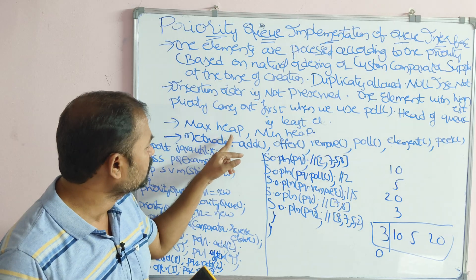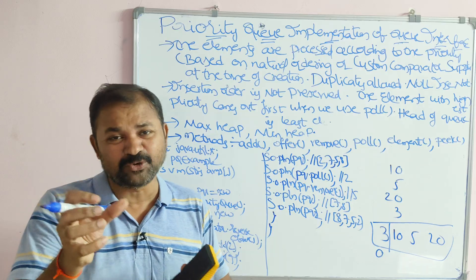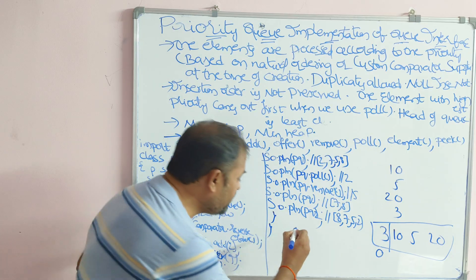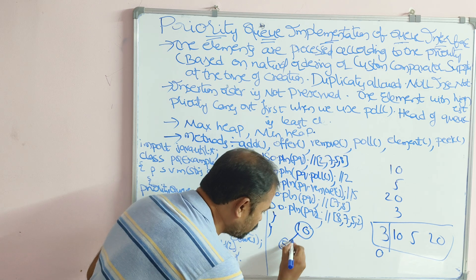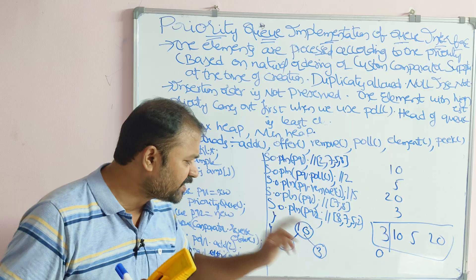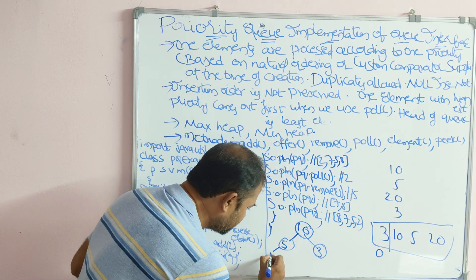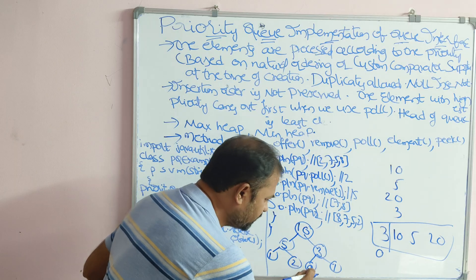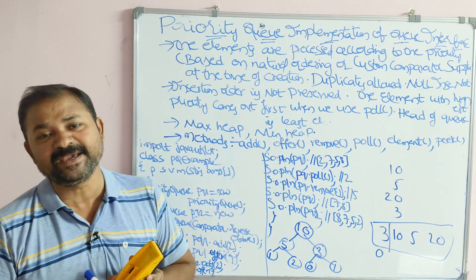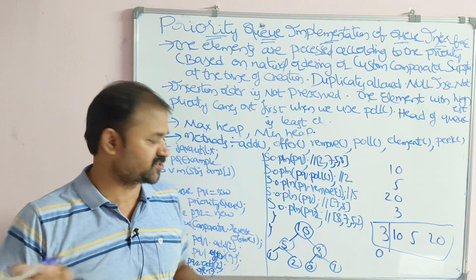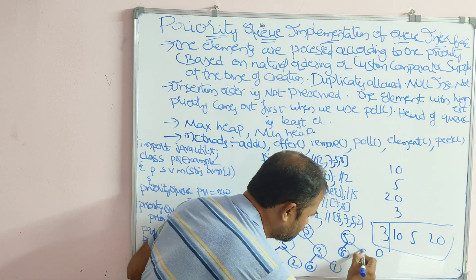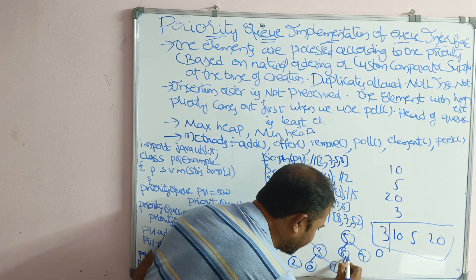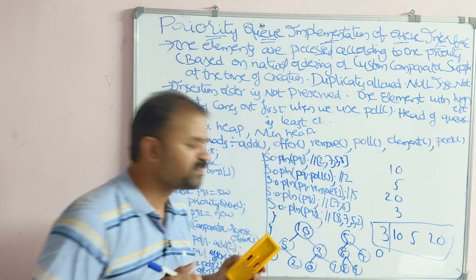There are two types of Priority Queue based on heap property: Max Heap and Min Heap. Max Heap means the parent value should be greater than its children. For example, parent 10 is greater than children 5, 1, 3; parent 5 is greater than children 1, 2; parent 3 is greater than children 0 and 1. Min Heap means the parent value is smaller than its children. For example, parent 5 is smaller than children 6 and 7; parent 6 is smaller than children 8 and 9.